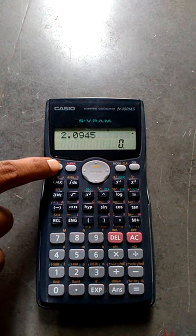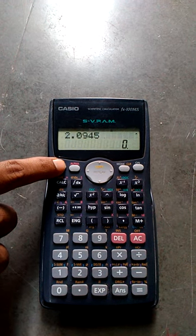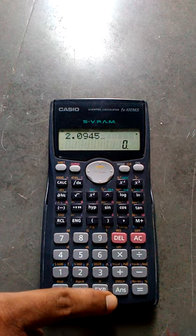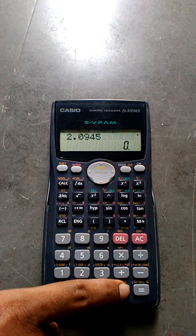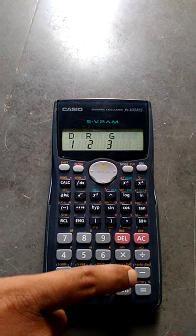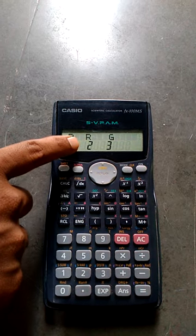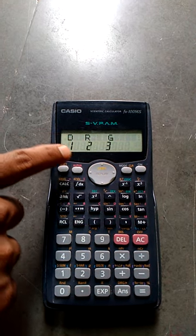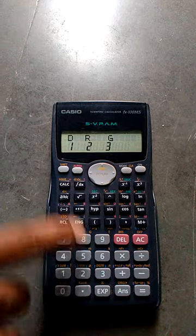Press shift, then there is an answer button. Press on the answer button, then you take it into the radian, that is press 2. You can see DRG, so 1, 2, 3. So radian, you have to press 2.